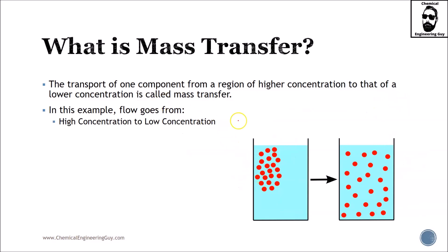The transport of one component from a region of higher concentration to that of a lower concentration is called mass transfer. So if you want to learn one definition, this will be it. My opinion is not good enough, but that is, let's say, the formal definition from a book. And in this example in which we drop a dye drop here, red dye, and this is water, high concentration to low concentration. So this is fun.